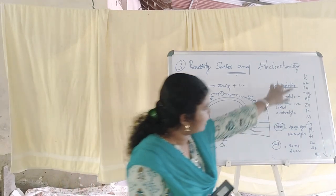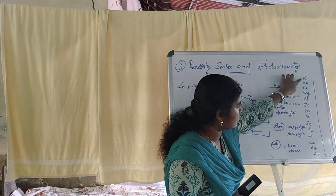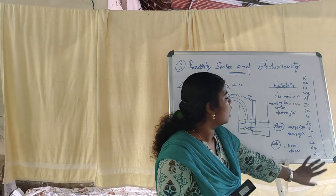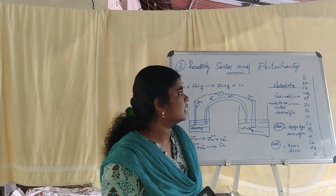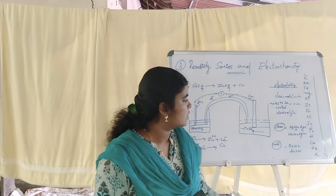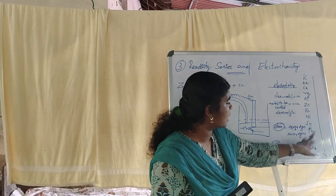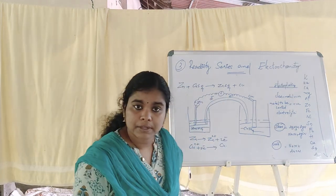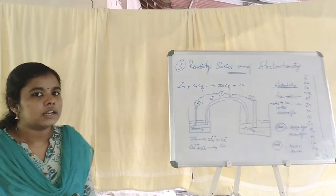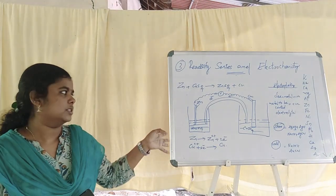This is basically the reactivity series. The reactivity series includes: potassium, sodium, calcium, magnesium, aluminum, and gold. In this case, zinc and copper are in the reactivity series. Zinc displaces copper — that is a typical displacement reaction.